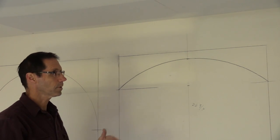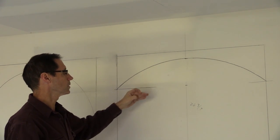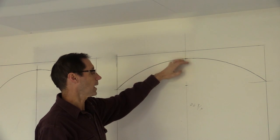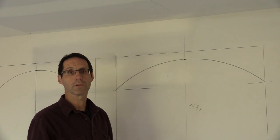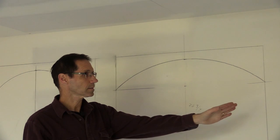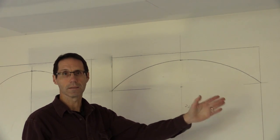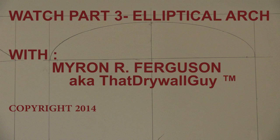There is another arch that you can build that will still have the same height and the same spring line, no matter what width opening it has, and that's called an ellipse. So on this next segment here, I'm going to draw an actual elliptical arch.